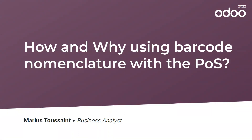Hello everyone and welcome. In this video we will see how and why we can use barcode nomenclature with the point of sale in Odoo. For example, we have a shop retailing food with three types of products. The first are vegetables weighed directly by the customer at a weighing scale, which prints a label the customer can scan at the cashier to pay. This is the first use of barcode nomenclature with the point of sale.